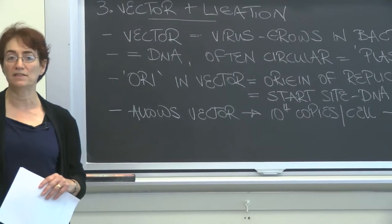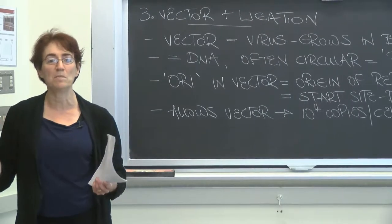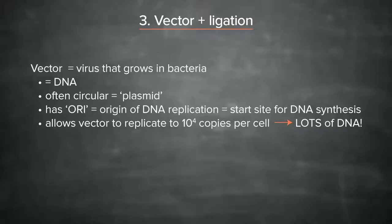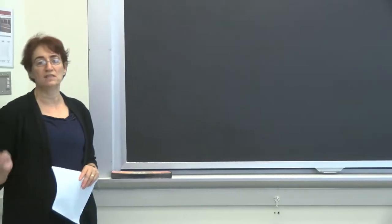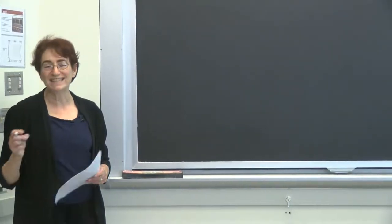There's one other property that vectors usually have, and that is called a selectable marker, or sometimes two selectable markers. Vectors also have a selectable marker. What we have to do now is insert the gene of interest into the vector — we have to do a pasting. And we paste the gene of interest into the vector using a particular enzyme called DNA ligase. Our gene of interest is pasted, or covalently bonded, through phosphodiester bonds that join up the nucleic acid polymer, into the vector using DNA ligase.